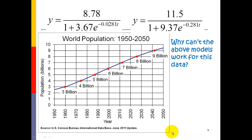Another example for logistics is population growth. Exponential functions are great for population growth in the beginning, but they don't account for the idea that we have limited resources. If you had unlimited resources, exponential is a great model. But with limited resources, you need logistics because your population can't just keep on growing. Now I have two models at the top of the screen — we want to investigate why both don't work.